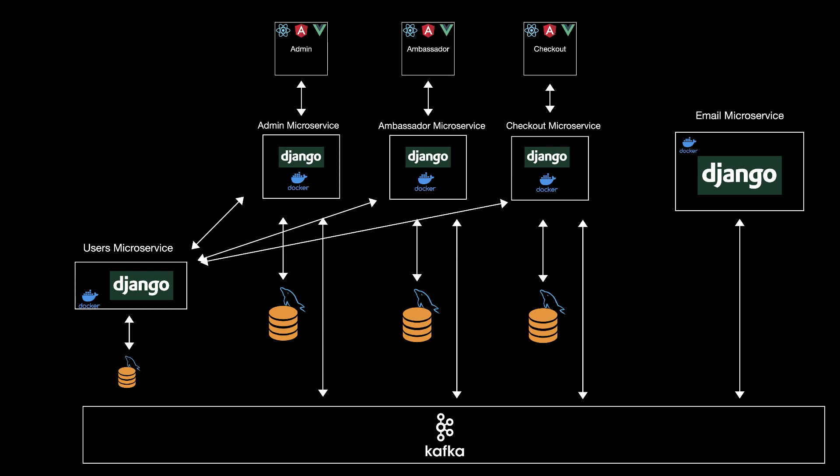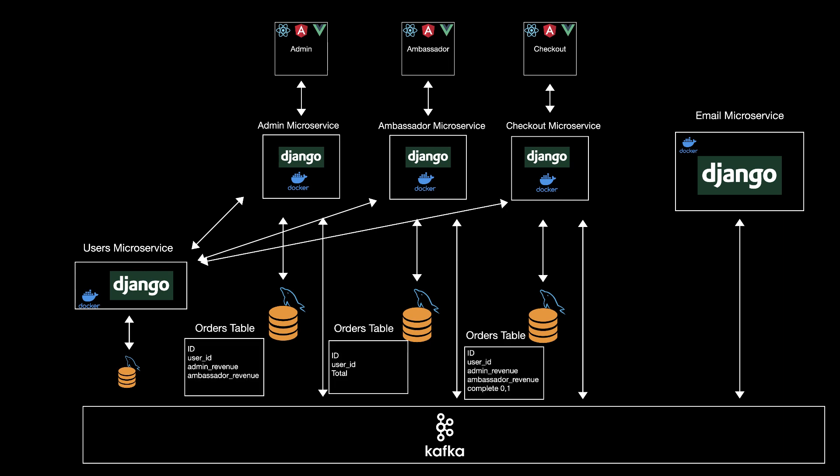Each microservice will have its own database, and some of them will have similar data. But this doesn't mean the data will be the same or used the same way. For example, the orders table will be available on each microservice, but the columns will be different.